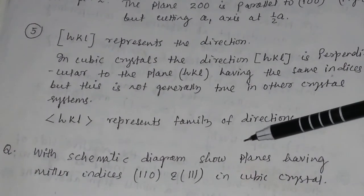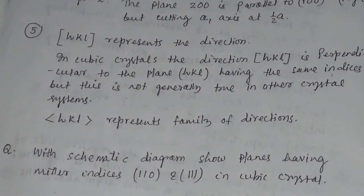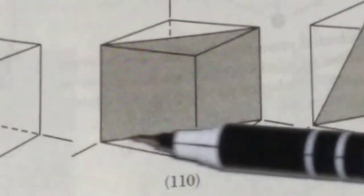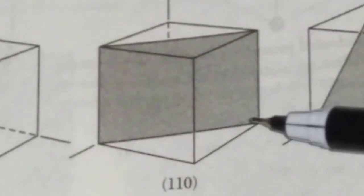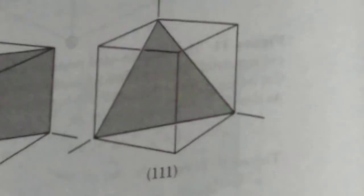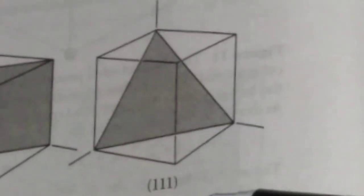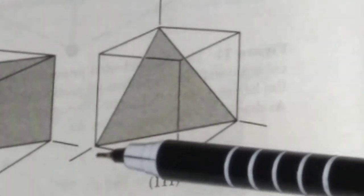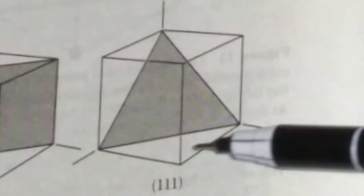Now, consider planes having Miller indices (1 1 0) and (1 1 1) in a cubic crystal. For the cubic crystal with x-, y-, and z-axes, the plane shown in the figure has Miller index (1 1 0). For another cubic crystal, with x-, y-, and z-axes, the plane shown has x-intercept 1, y-intercept 1, and z-intercept 1, so the Miller index will be (1 1 1).